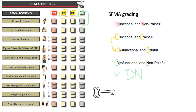The DN category is really important to pay attention to. For example, a patient presenting with cervical pain may test abnormal in multi-segmental extension or rotation as well. Some movements may be classified as Dysfunctional Painful, while others test as DN. The DN finding is where you want to start — it may indicate a motor control or mobility issue with no pain present, making it a priority to further explore.